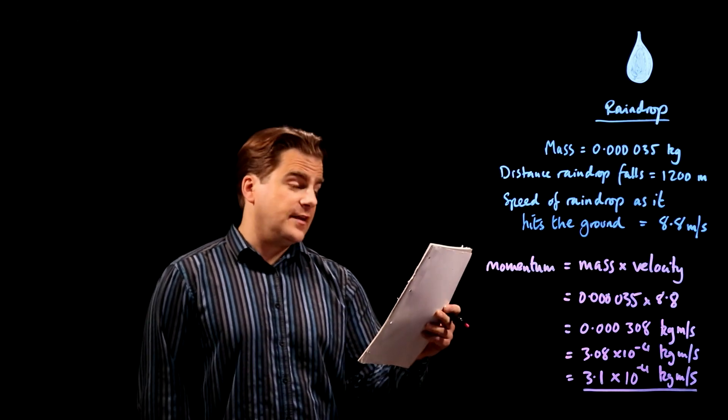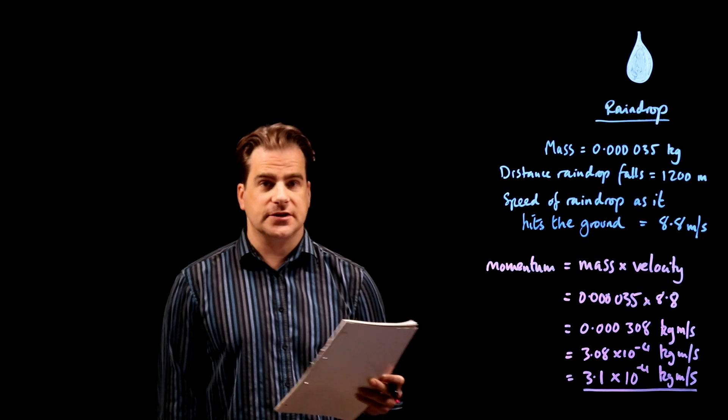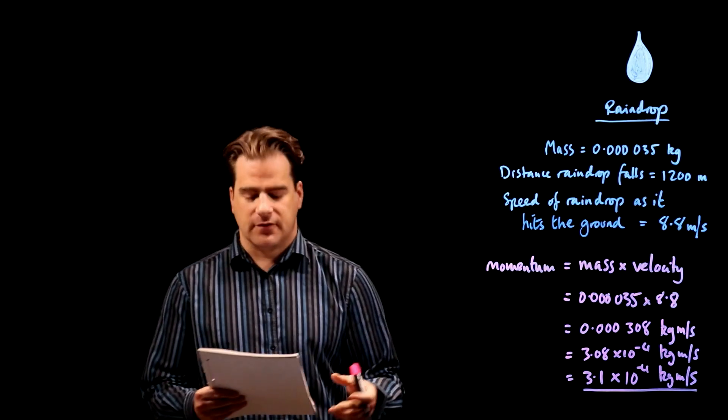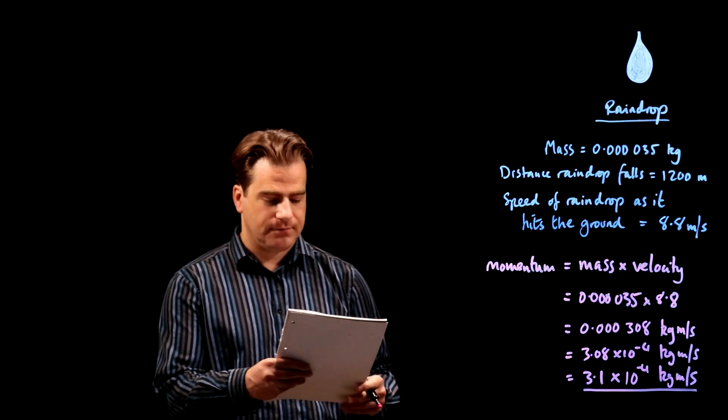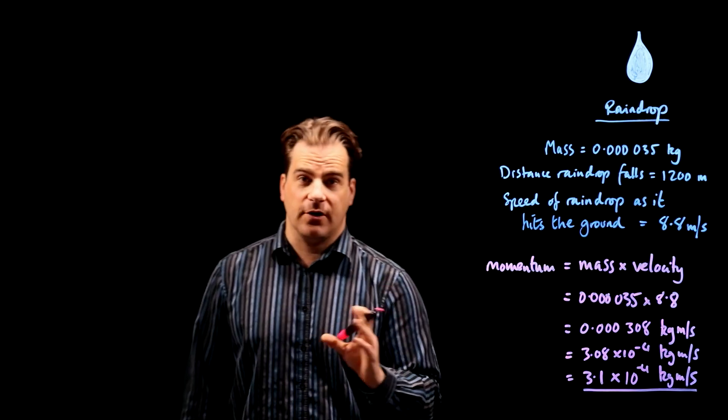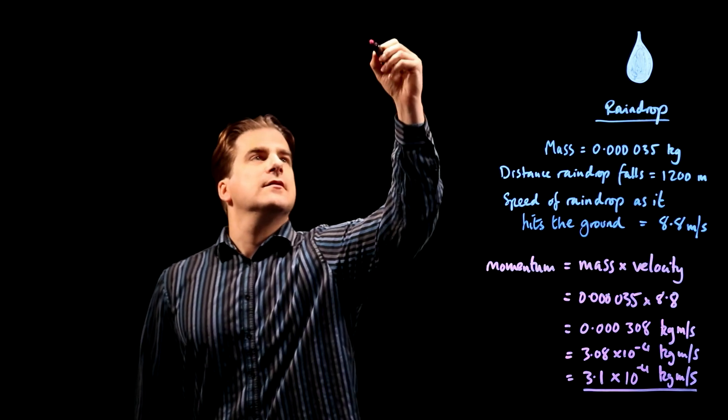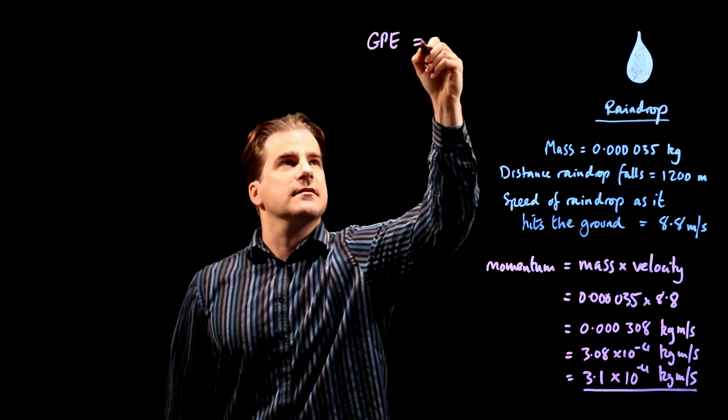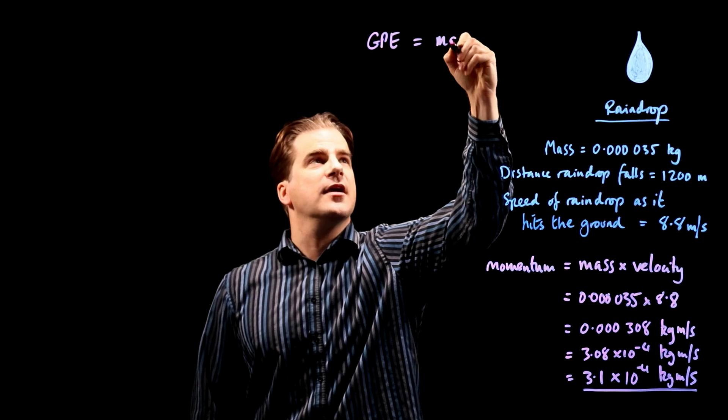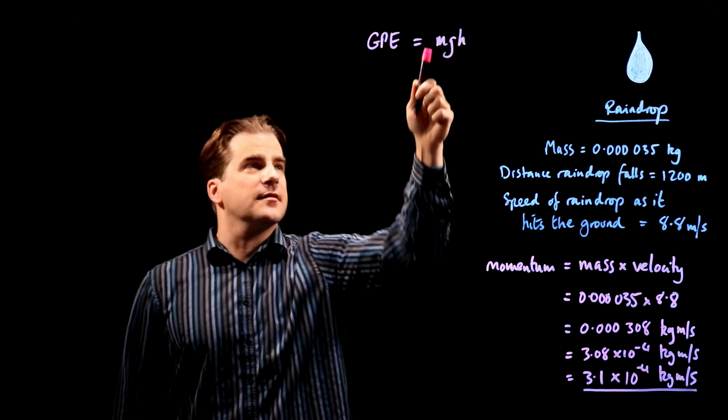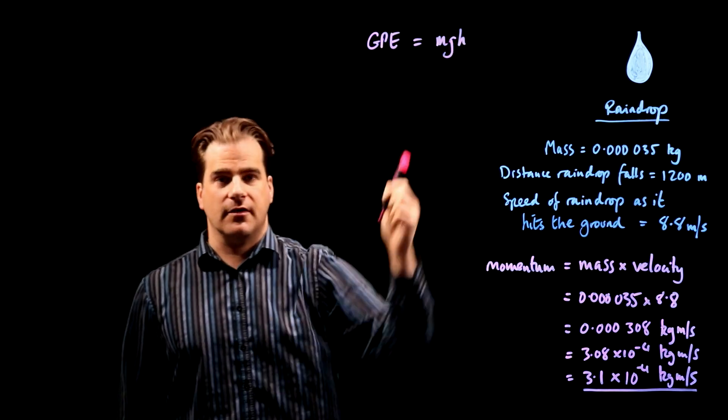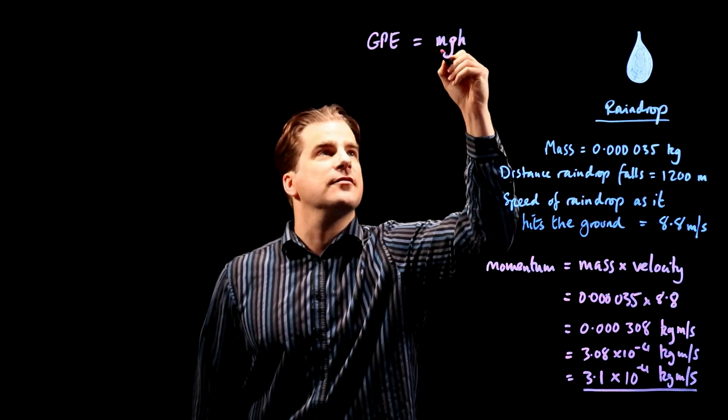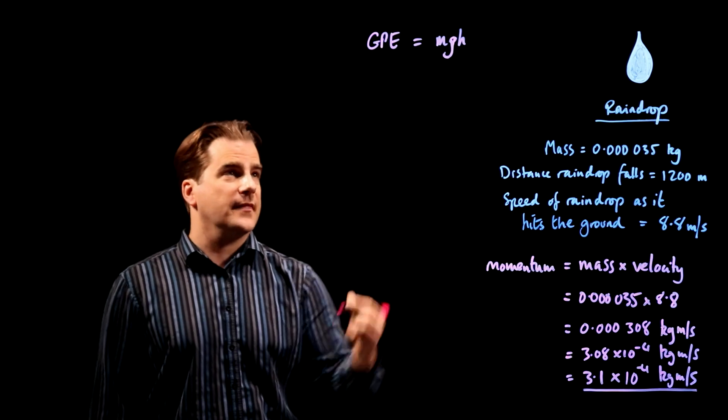State the equation linking gravitational potential energy, mass, g acceleration due to gravity, and height. Okay, well again, you've got to note this off by heart. Gravitational potential energy is simply mgh. It's the mass of an object times acceleration due to gravity, g, times the height of the object above the ground, h.